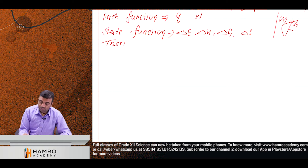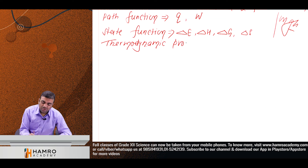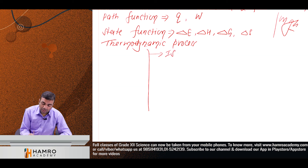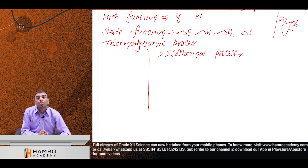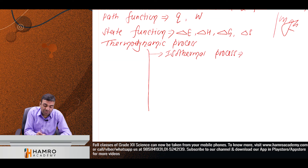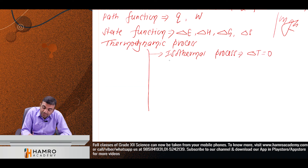Now, different thermodynamic processes. First, isothermal process: there is no change in temperature, so ΔT = 0.